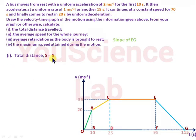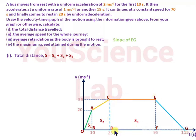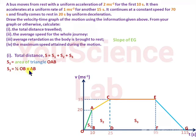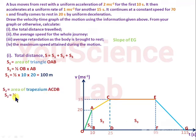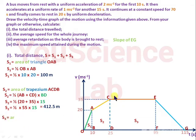The total distance traveled equals S1 plus S2 plus S3. S1 is the area of triangle OAB, equal to half times 10 times 20, which is 100 meters. S2 is the area of trapezium ACDB, equal to half times (20 plus 35) times 15, which gives half times 55 times 15, equaling 412.5 meters.